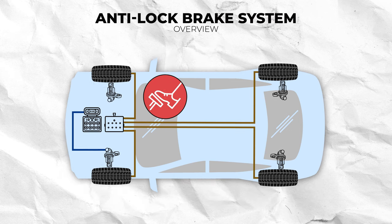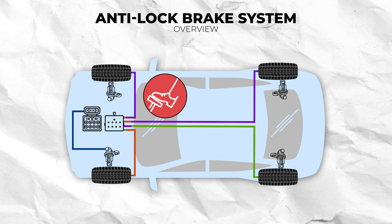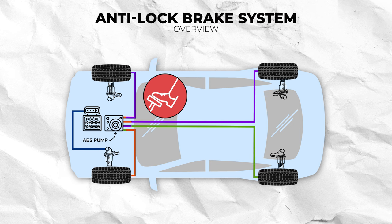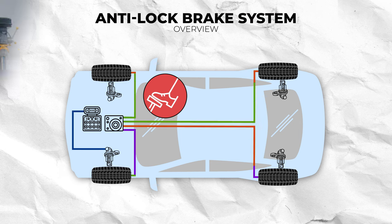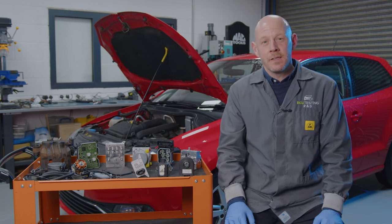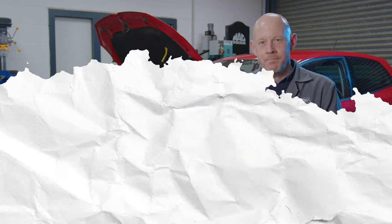During braking this sequence can occur many times per second and usually results in a pulsing sensation coming from the brake pedal, which is caused by the pump motor modulating the brake fluid pressure. That's the basic function covered, so now let's look at the components that make up the anti-lock braking system.